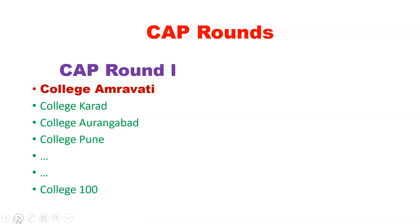There are many different options — around 300 options available. If you choose the first option, you get a class. The unique approach is that everything is done online in the CAP round. You have to select the color preference. Once you enter CAP round 1, you can add up to freeze — you will pay a seat acceptance fee and add up to freeze.